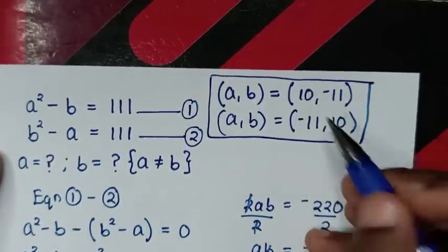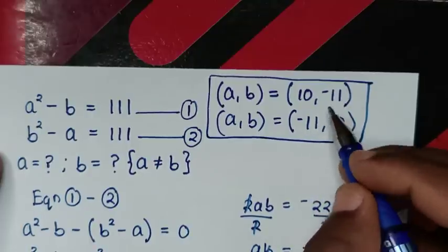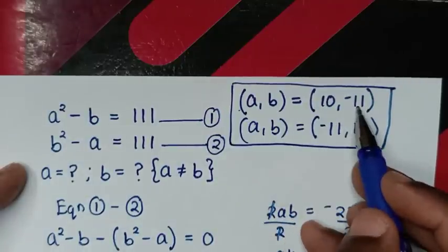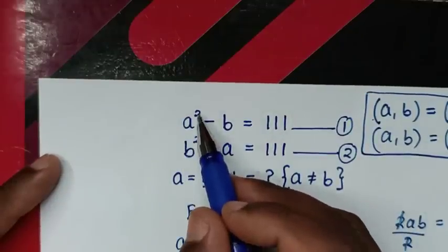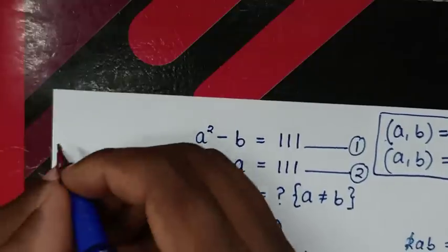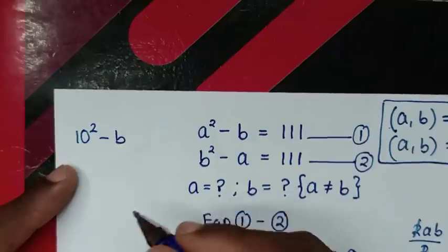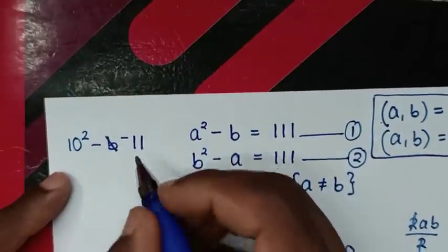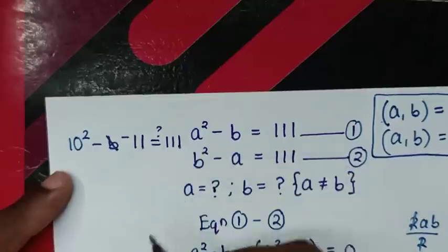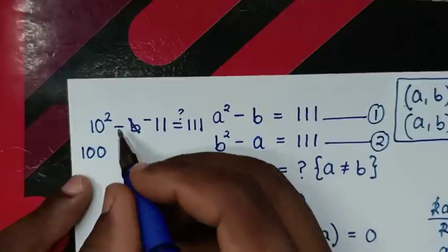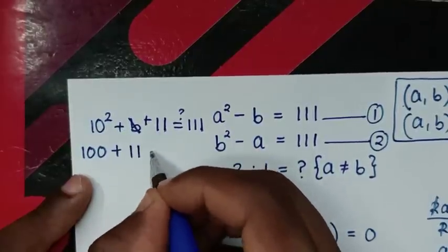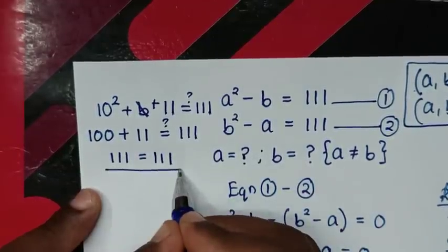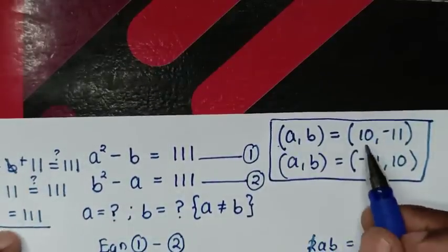We note that in the two solutions, the values of a and b interchange. Let's verify the first solution (a, b) equals (10, negative 11). Substituting into equation 1: a² minus b equals 10² minus (negative 11) equals 100 plus 11 equals 111. The left side equals the right side, so the first solution is confirmed correct.